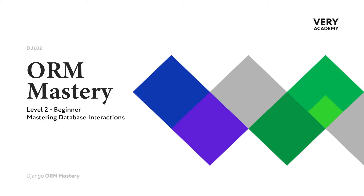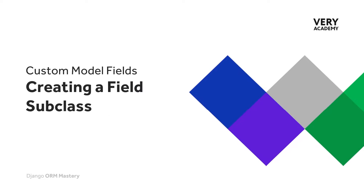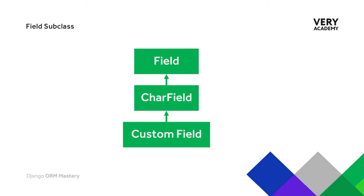Having introduced background on custom fields in the previous tutorial, let's go ahead and build our first custom field. Here we're going to subclass from an existing Django field type — specifically a CharField. The CharField inherits everything from Field, so when we build a new custom field, we have access to all the attributes, features, and behaviors from both CharField and Field.